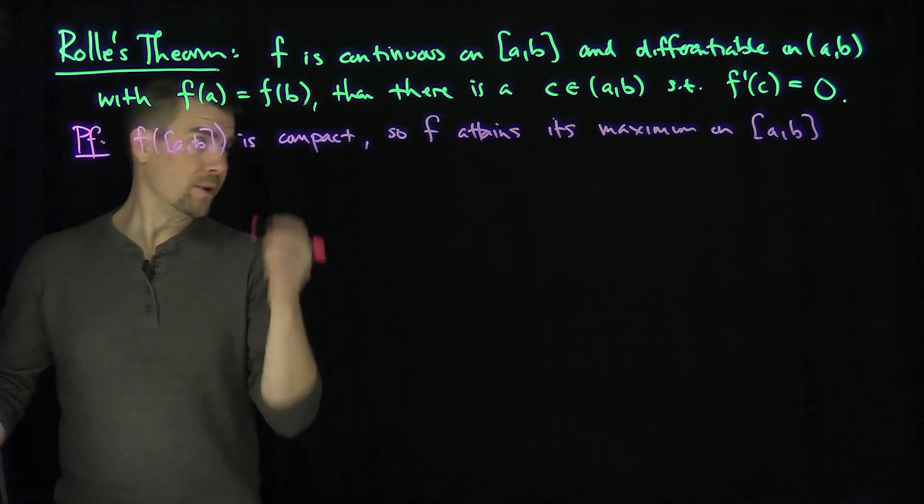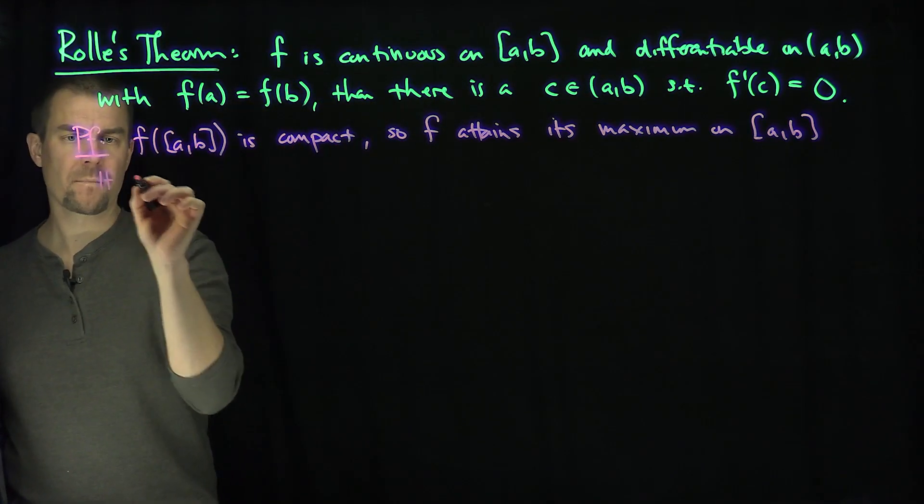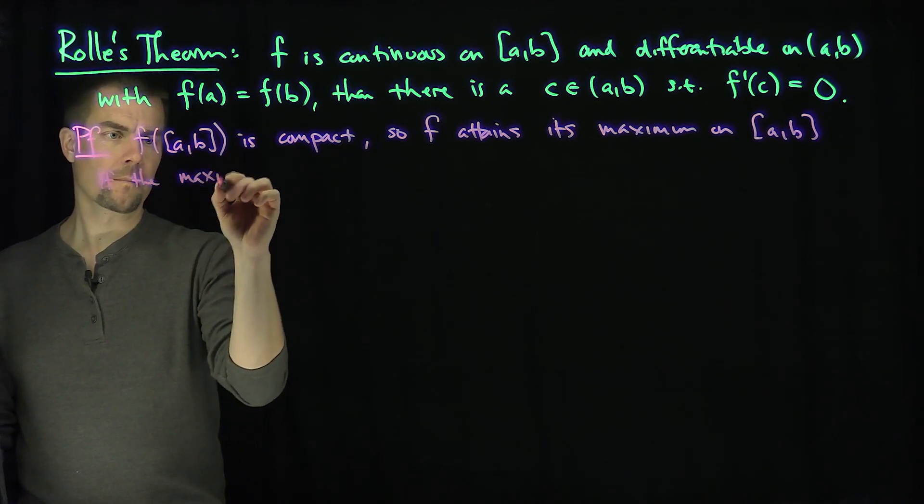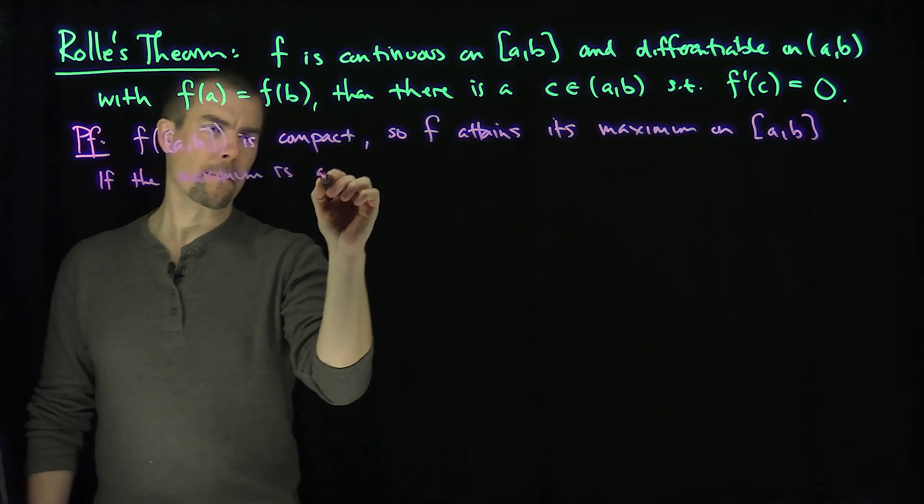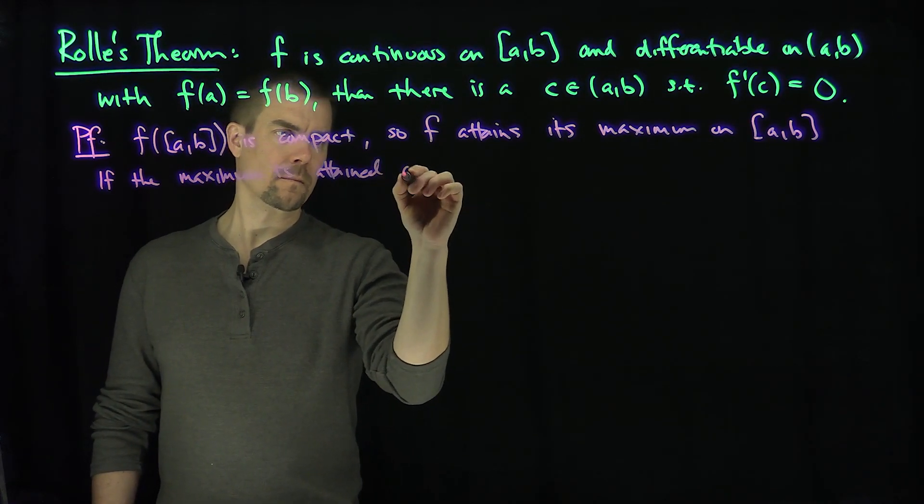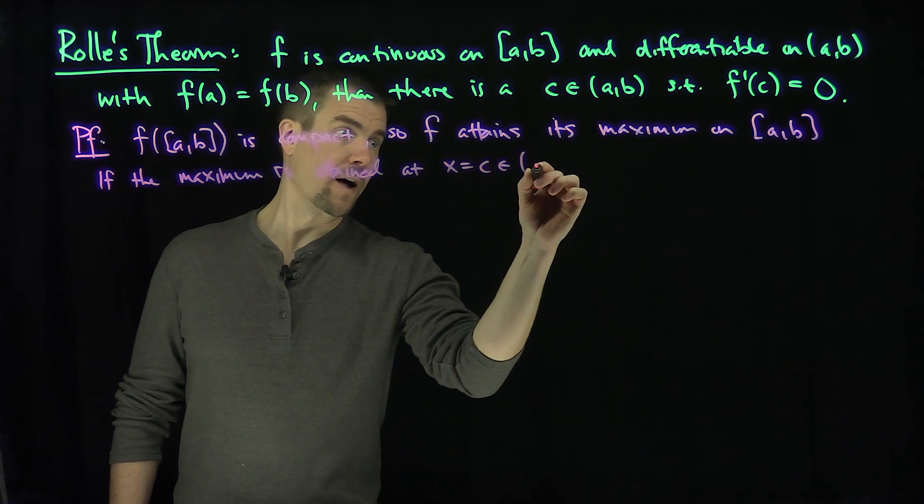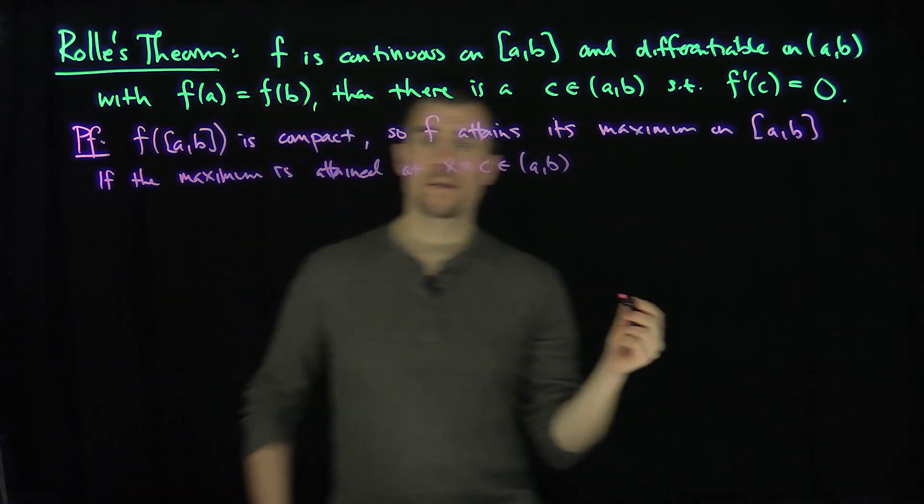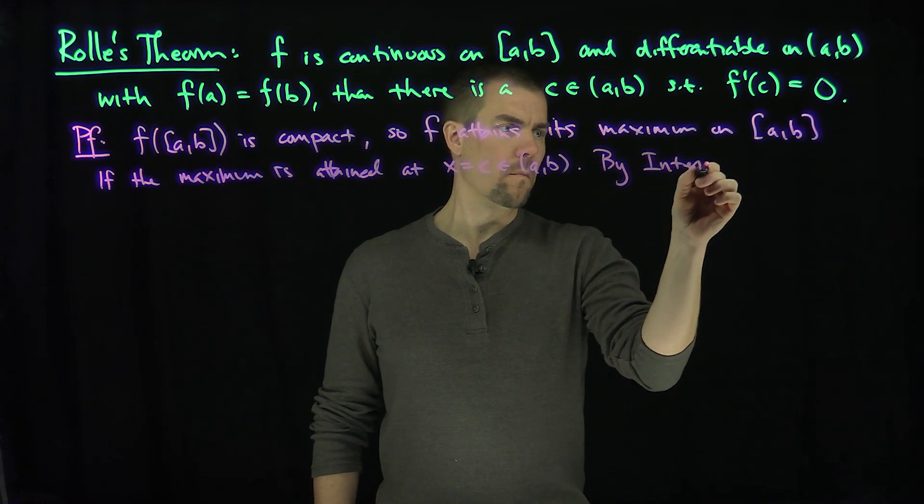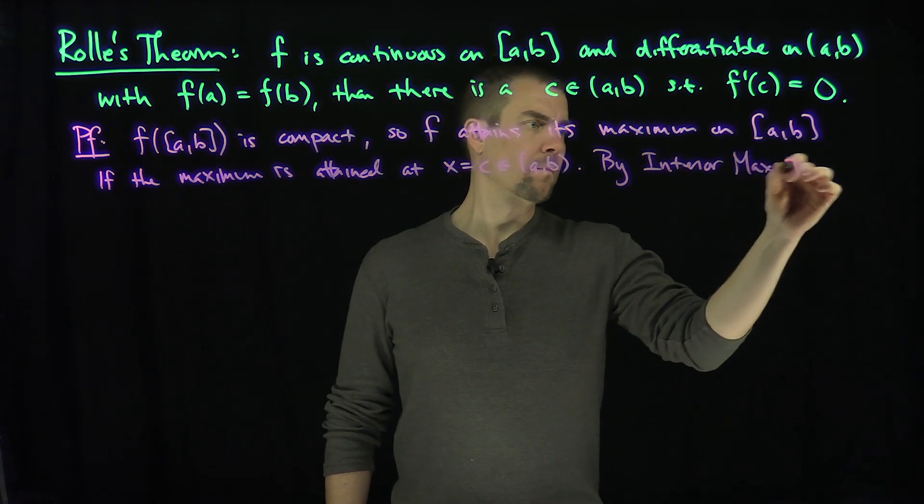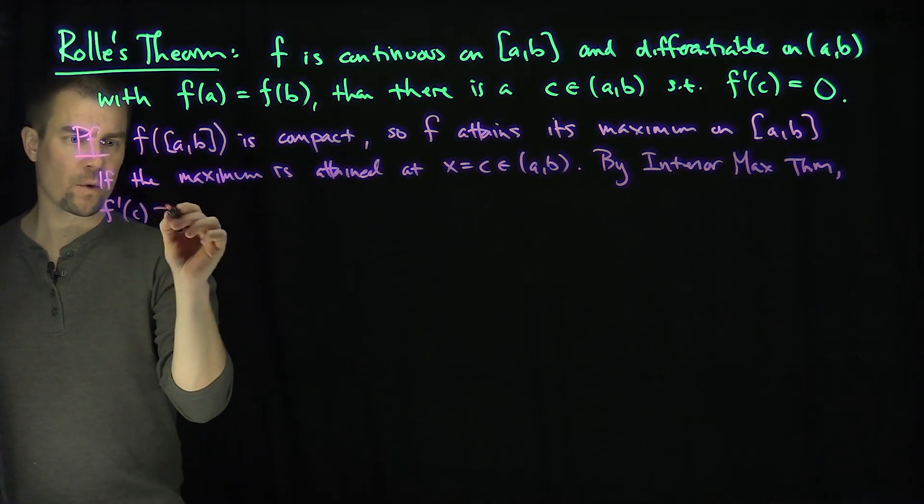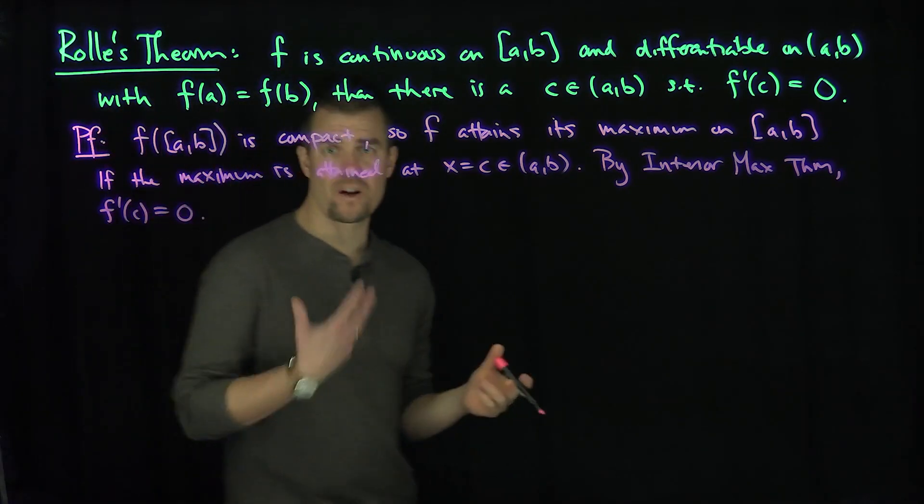Now one of two things can happen. If the maximum is attained on the interior of (a,b), then by the interior maximum theorem we know that f'(c) will have to be zero. So at an interior maximum, the derivative would have to be zero.